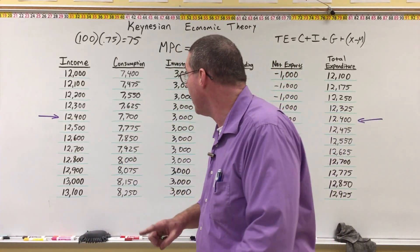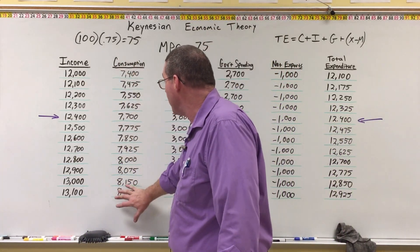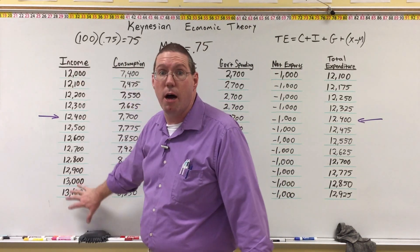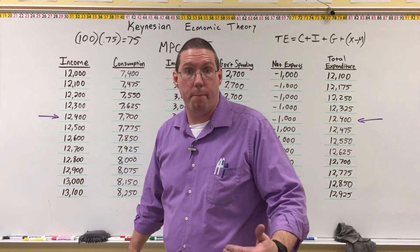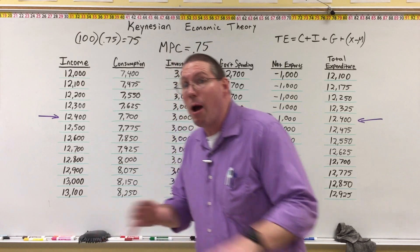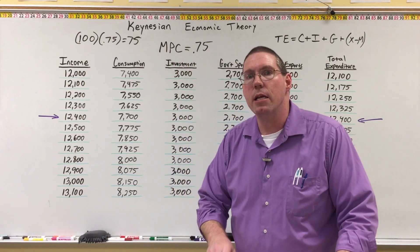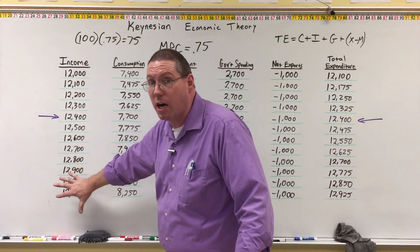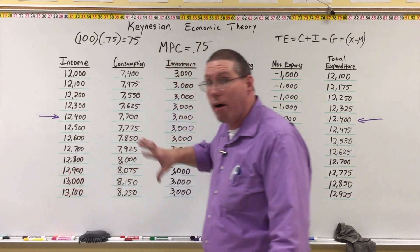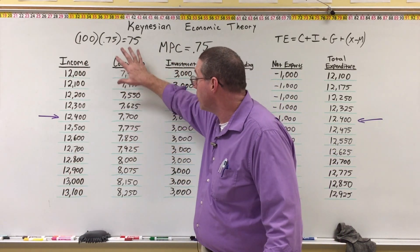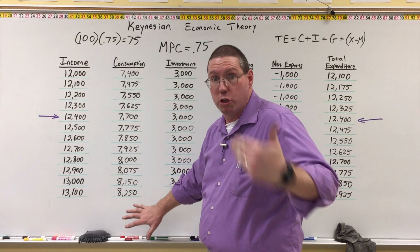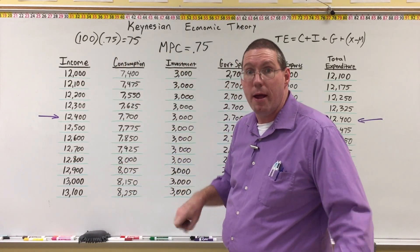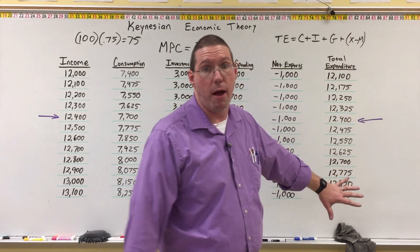He says people are going to want to spend. The only thing that needs to happen is for them to spend more — their income needs to go up. Keynes says that we need to increase the income of households so that consumption will do its work. As income goes up, consumption will go up, and then total expenditure goes up.